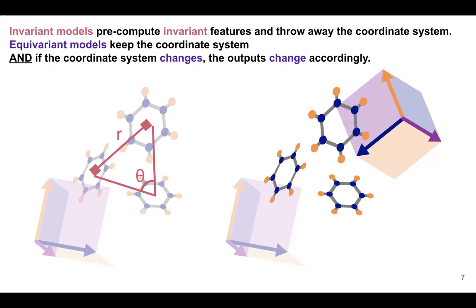There are two broad approaches. One is to use invariant features — features that don't depend on your choice of coordinate system, like relative distances and bond angles — and operate on those with regular neural networks. That's an extremely good approach with a rich body of work. The other is equivariant models, which keep the coordinate system around: if your coordinate system changes, outputs change accordingly. You're not stuck predicting only invariant features; you can also predict higher-order tensors and matrices.